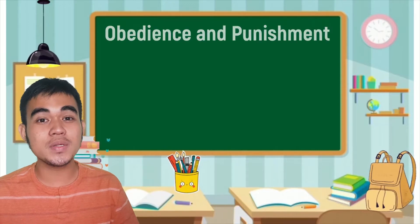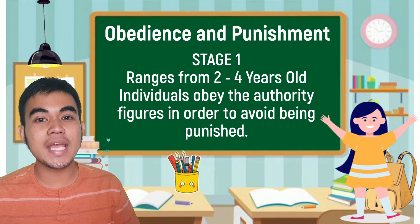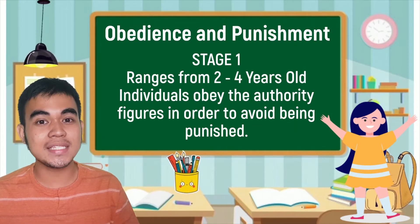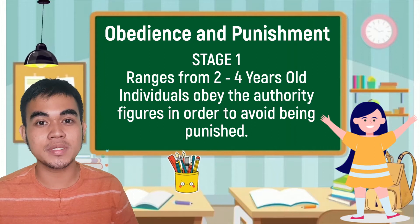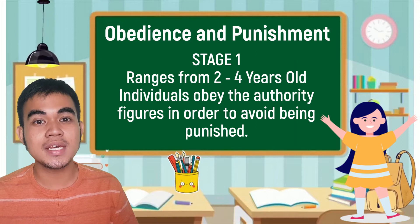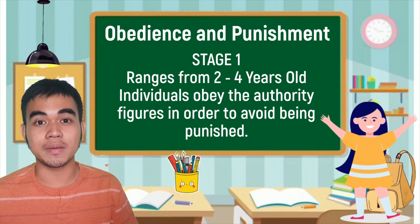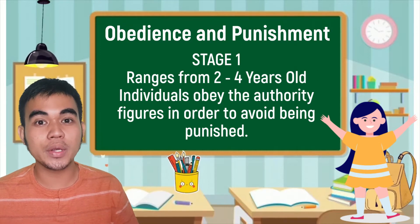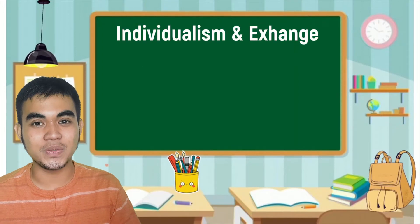Stage 1 is also known as the obedience and punishment orientation, which happens from 2 to 4 years old. At this stage, people behave according to the socially acceptable norms because they are told to do so by authority figures such as a teacher or a parent. In simpler terms, at this stage, we obey authority figures in order to avoid punishment.